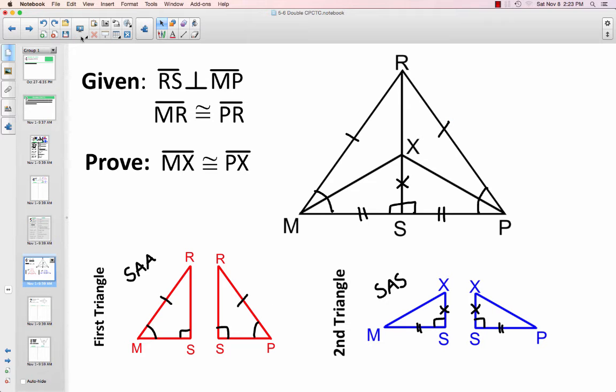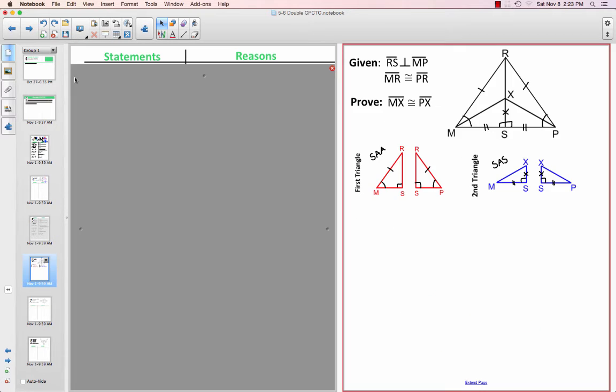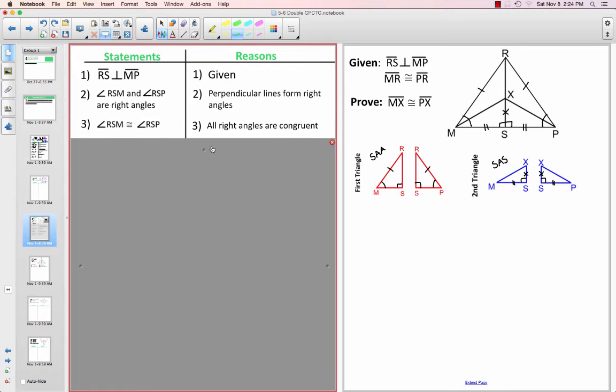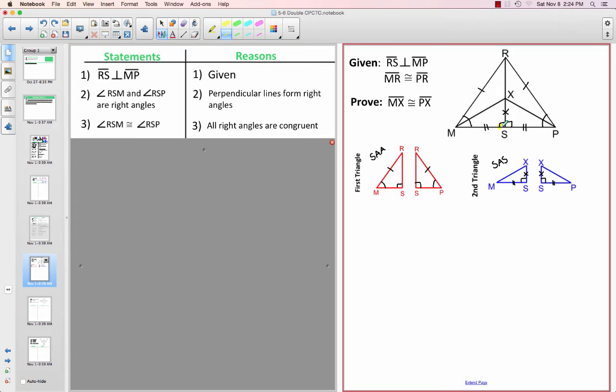So I just went ahead and put our markings back down. And every time we go ahead and write something in our proof, I'm going to highlight it on our plan to show that we took care of it. So we have our given RS is perpendicular to MP, and we know that gives us right angles. So perpendicular lines form right angles, and those right angles are congruent. So I'm going to mark that off with a highlight to show that we went ahead and took care of that.